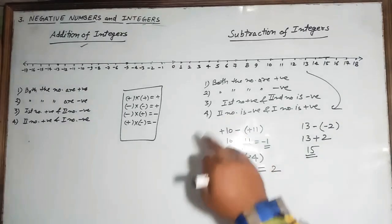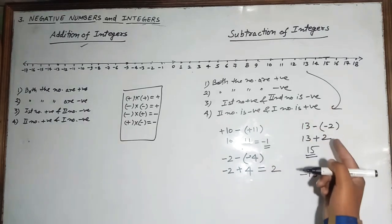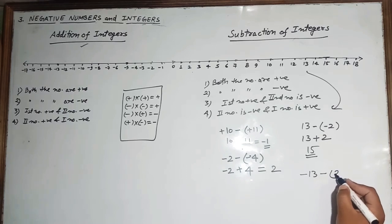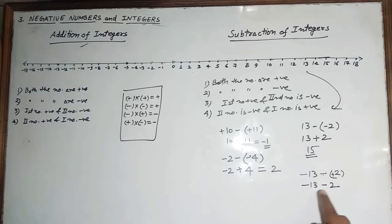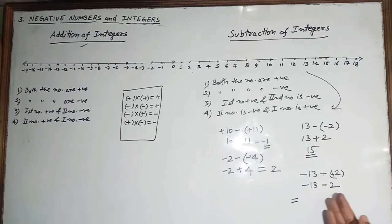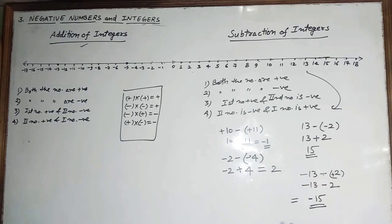Case 4 — first number negative and second positive: for example, minus 13 minus plus 2. Plus into minus gives minus 2, so it becomes minus 13 minus 2. Both numbers are negative, so we add the absolute values: 13 plus 2 equals 15, and the sign is negative, giving minus 15.